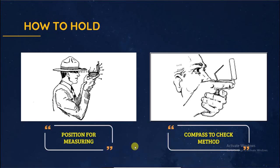How to hold. Now we discuss position for measuring and compass to check method. First, open the lid until it stands up at right angle to the main body of the compass, like figure 1. Turn the sight prism fully over to the limit of its movement so that the sighting tip is on top of the prism.